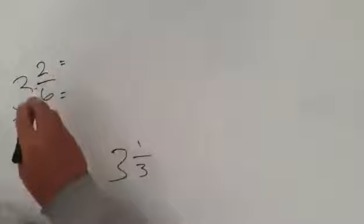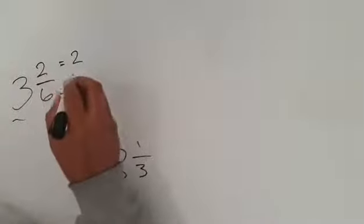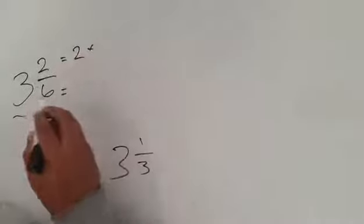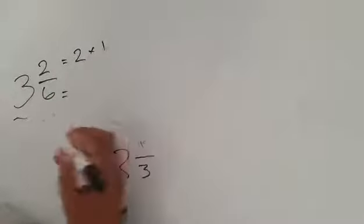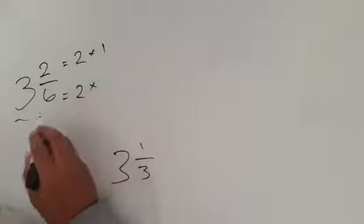So the highest common factor is two. How many times does two go into two? One. And then again, two is your highest common factor. How many twos make six?